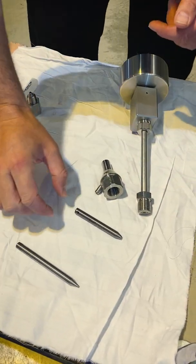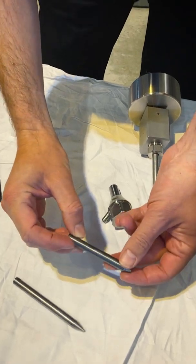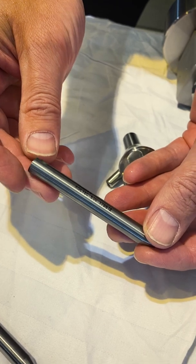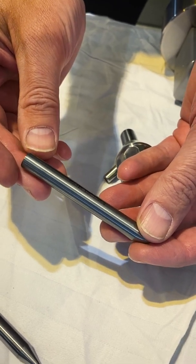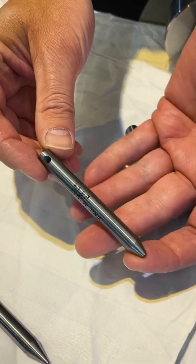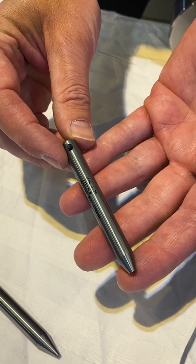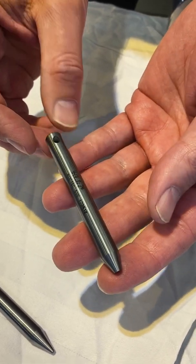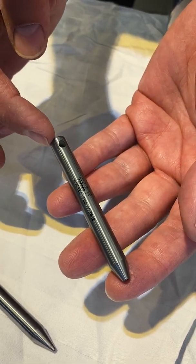Our abrasive nozzles, or focusing tubes as they're also called, are made from RockTech 100, RockTech 500, or APX material from Kennametal. What is unique with our nozzle is that they have an integrated mixing chamber in the top.